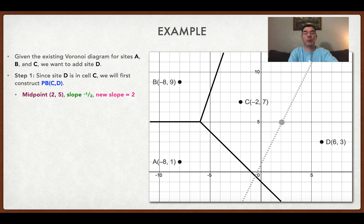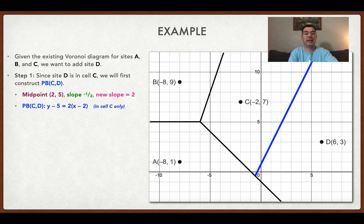The midpoint between C and D is (2, 5). The slope between C and D is negative one-half, so the slope of the perpendicular bisector is going to be positive 2 over 1. Remember, I'm only drawing the part that is in the cell that has site C in it, and it has equation y minus 5 equals 2 times (x minus 2). So, I've already hit an edge, and when I hit that edge I'm creating a vertex. That vertex also touches cell A, the cell that has site A in it.